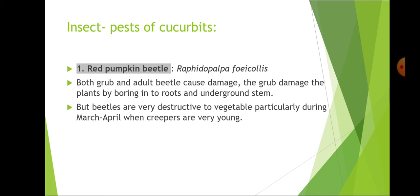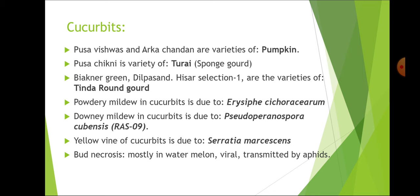In this lecture we cover the important points from the Nemrath Sunda book. Pusa Vishwas and Arka Chandan are varieties of pumpkin; Arka Chandan is also high in beta carotene. Pusa Chikni is a variety of Turai (ridge gourd). Bikaner Green, Dil Pasand and Hisar Selection 1 are varieties of Tinda (round gourd). Powdery mildew in cucurbits is due to Erysiphe cichoracearum and downy mildew due to Pseudoperonospora cubensis.